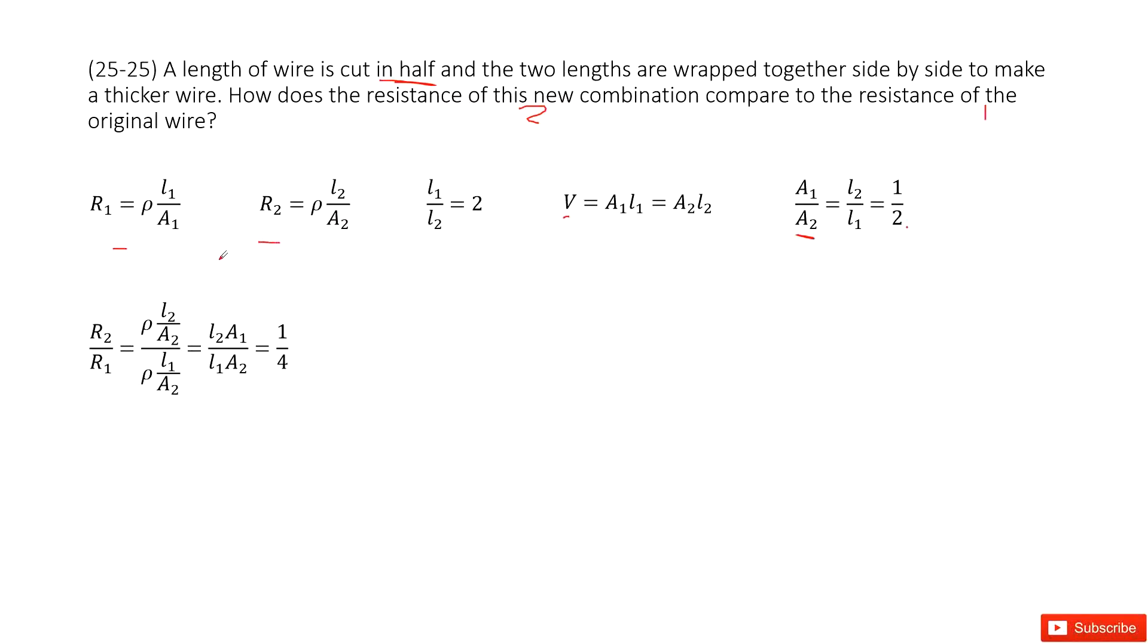Now you can see, we can find the ratio R2 over R1. You input R2 inside, R1 inside. ρ, ρ cancelled. So this can be simplified. And input the L1 over L2, A1 over A2 inside. You get the final answer of 1 over 4. Thank you.